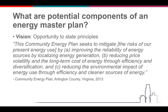Here's an example of a vision from the energy plan in Arlington County, Virginia. It says: 'This community energy plan seeks to mitigate the risks of our present energy use by improving the reliability of energy sources, by localizing energy generation, reducing price volatility and the long-term cost of energy through efficiency and diversification, and reducing the environmental impact of energy use through efficiency and cleaner sources of energy.' You can see how Arlington sees a different place for themselves in terms of energy, and this vision is critically important to always come back to and make sure that decisions being made align with it.